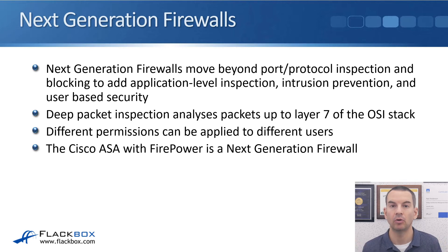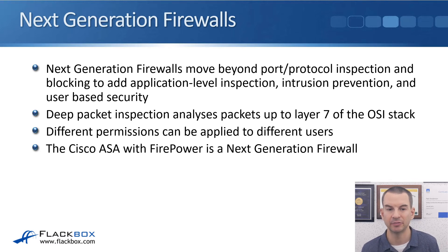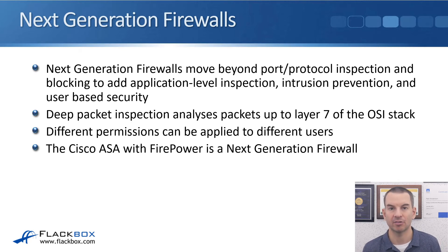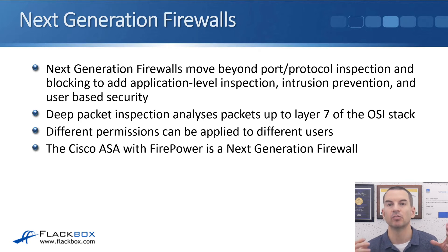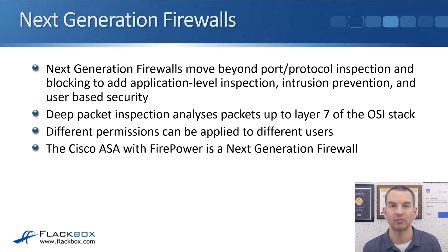That's how firewalls and their rules work. Next-generation firewalls go beyond port and protocol inspection at layers three and four, adding application-level inspection, intrusion prevention, and user-based security. Deep packet inspection analyzes packets up to layer seven of the OSI stack, rather than only up to layer four as with traditional firewalls. Different permissions can also be applied to different users based on their job roles, going beyond just source and destination IP addresses and port numbers.